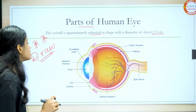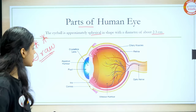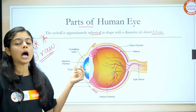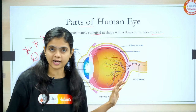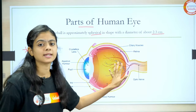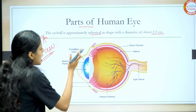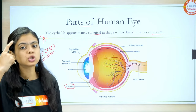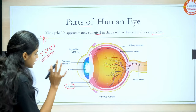Moving forward, this is the diagram of the human eye. Let's go through each part one by one — the definition and function of each part, and how you have to write it in your examination. Here I'm giving you an overview of what these parts are and what they do. Let's start with the outermost layer — that is called the cornea. The outermost layer of the human eye is called the cornea.